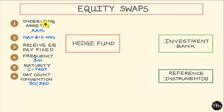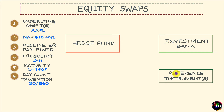Number one, the underlying asset for this equity swap will be the stock of Apple. In the context of this equity swap, we can also refer to this underlying asset as the reference instrument. Number two, the size of the equity swap — also referred to as the notional amount — let it be 10 million dollars. Once the size has been decided upon, the investment bank goes ahead and purchases shares of Apple for a dollar amount equal to 10 million, which is the notional.